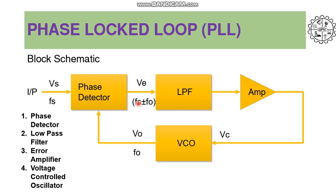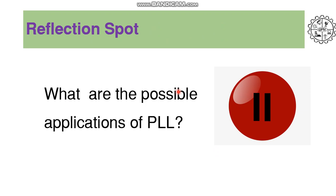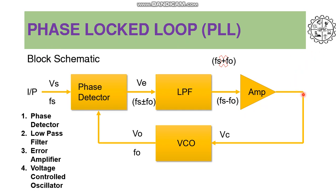So there will be two frequencies — one will be the addition and another will be the subtraction. Naturally the addition frequency will be higher than the difference frequency. As we know, the low pass filter attenuates high frequency and allows low frequency to pass. So the sum frequency Fs plus FO will be rejected and Fs minus FO will be allowed to pass through the low pass filter. Depending on Fs minus FO, the error voltage is generated and applied as a control voltage to the VCO.